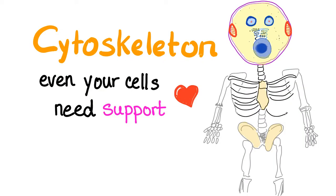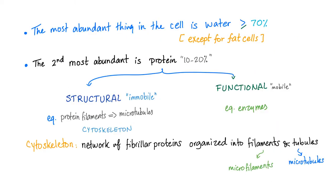Cytoskeleton is the skeleton of your cell, because cyto means cell, and even your cells need some support. In the previous lecture, I've told you that the most abundant thing in your cell is water. The second most abundant is protein. We have two types: structural proteins and functional proteins. Cytoskeleton is an example of a structural protein.